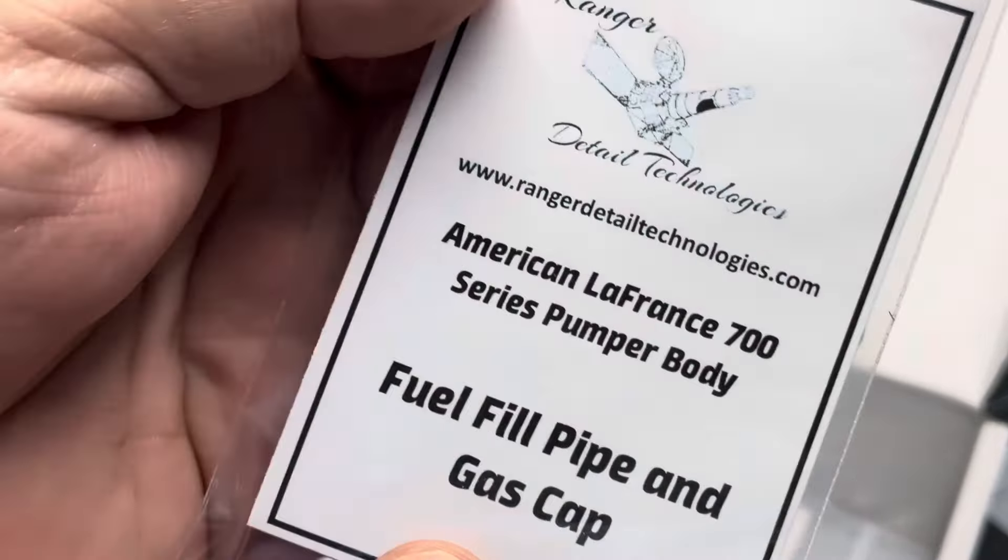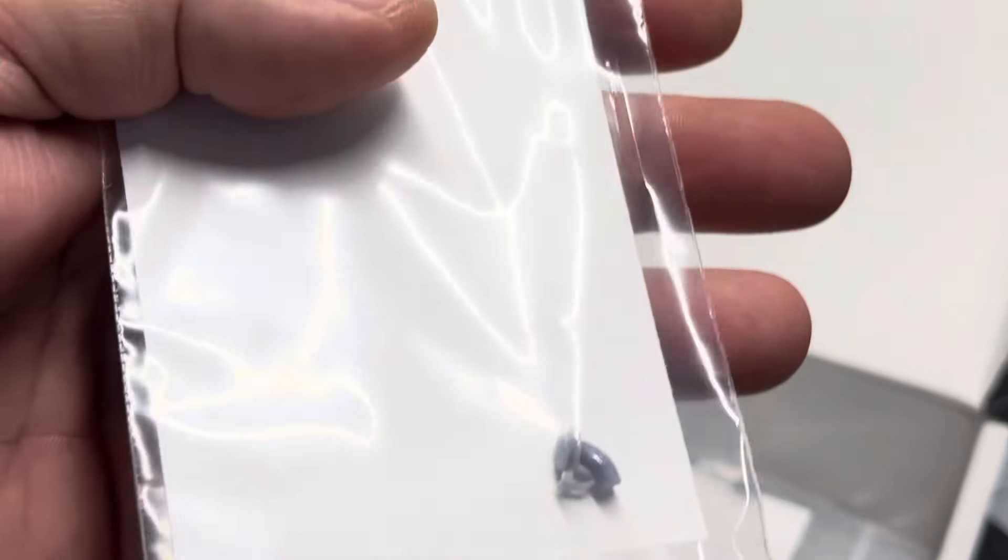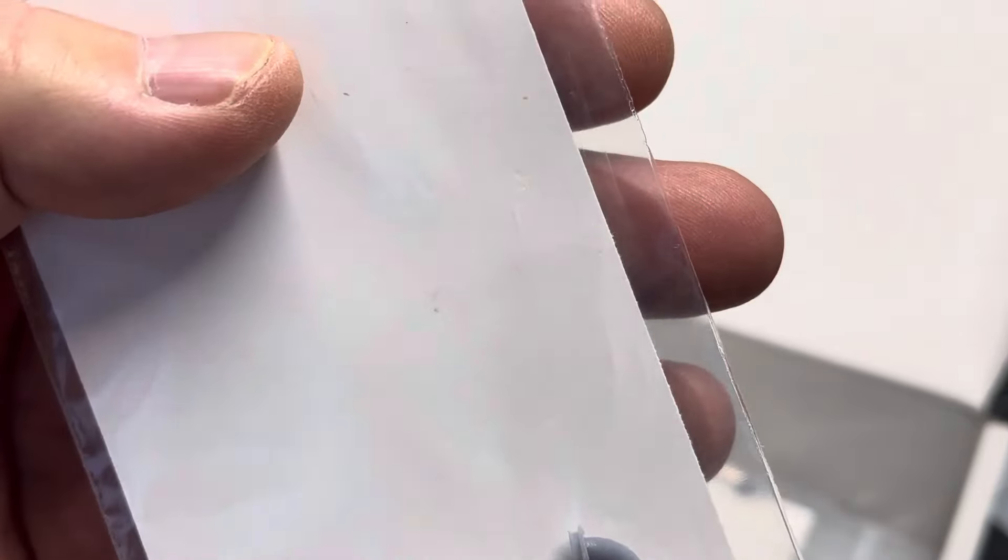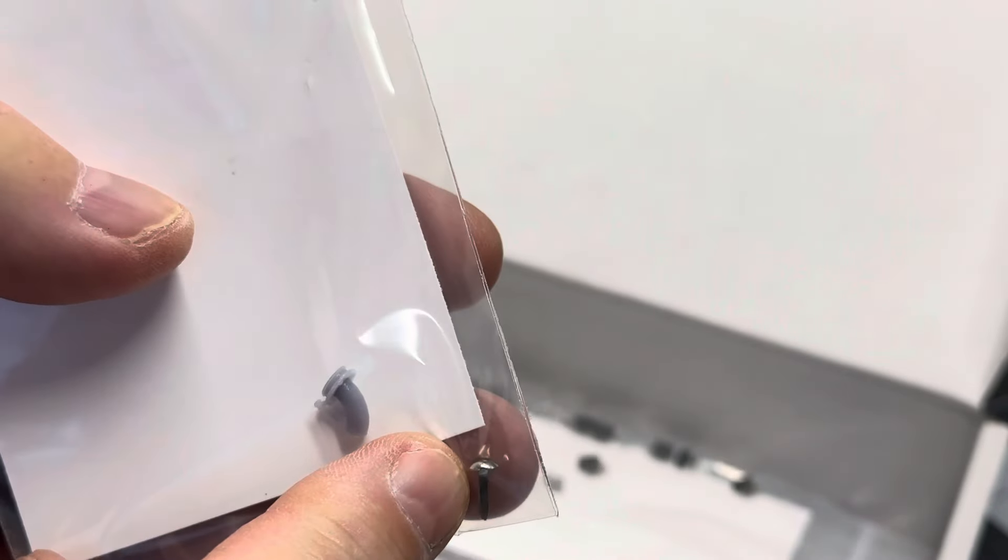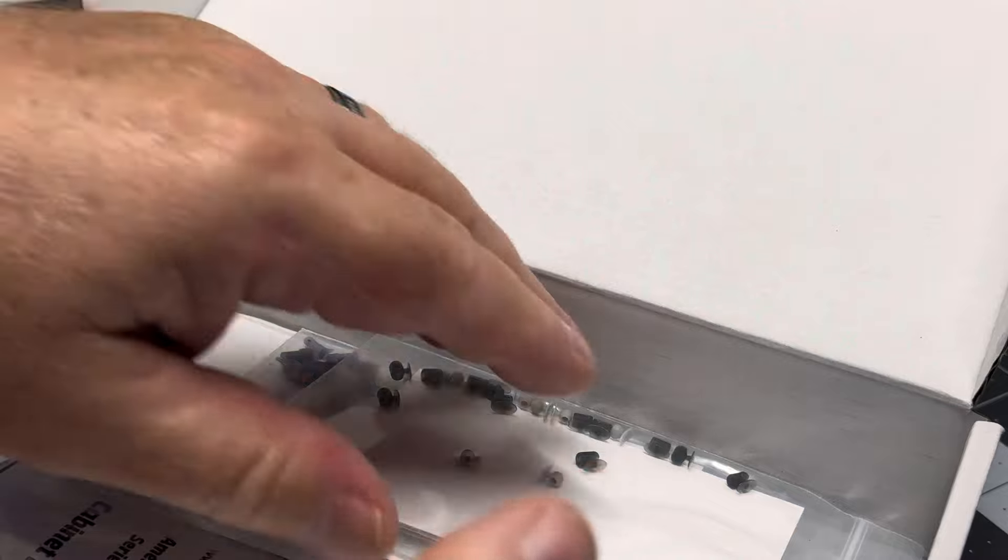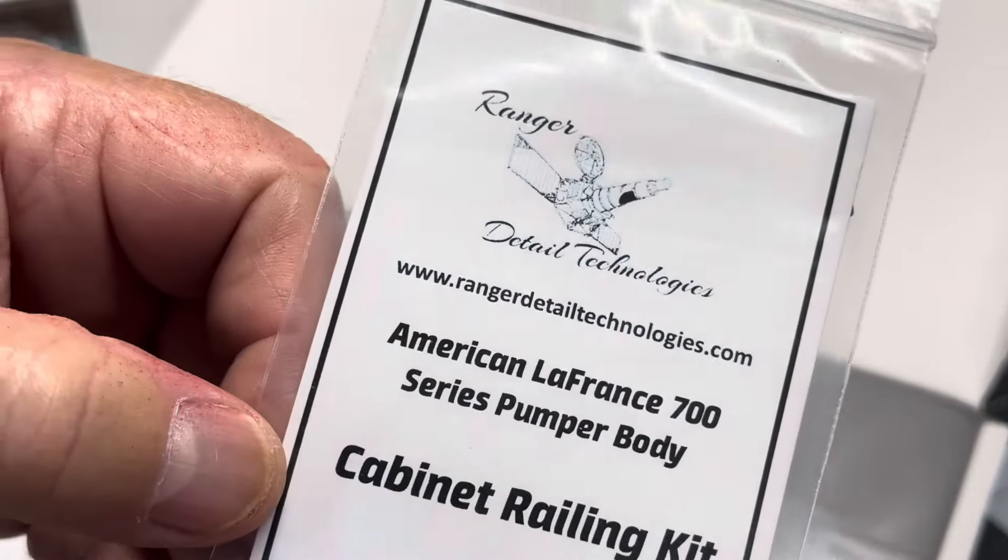Here we have the fuel fill pipe and gas cap. These little parts like this - Hobby Lobby, man, jewelry section. Cabinet railing kit.